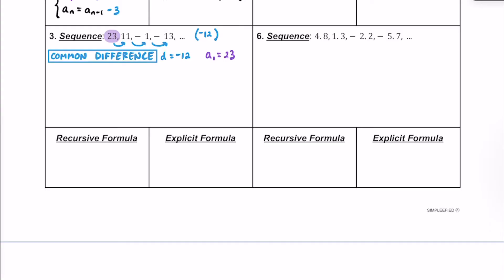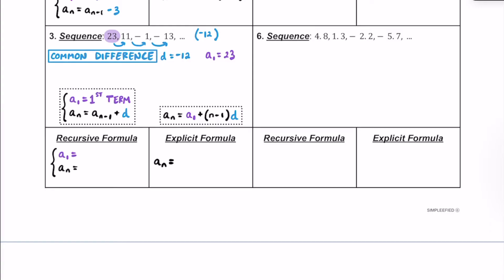Just like in the last couple of examples, to write our recursive and explicit formulas, those are the only two pieces of information that we need. Hopefully we can memorize how they are supposed to look, or conceptually make sense of how to build them each time. Let's start with the recursive formula: a sub 1 is 23. And then a sub n is going to be equal to a sub n minus 1 — a number right before a sub n — and then we write minus 12.